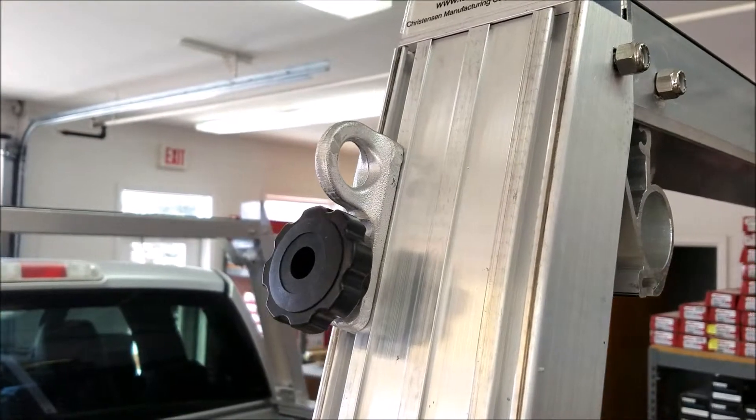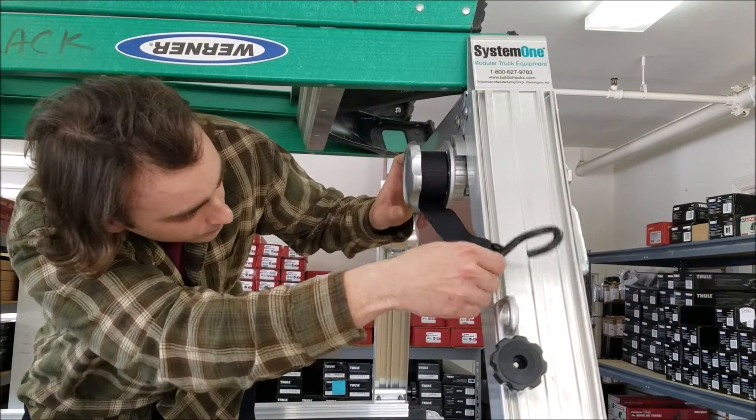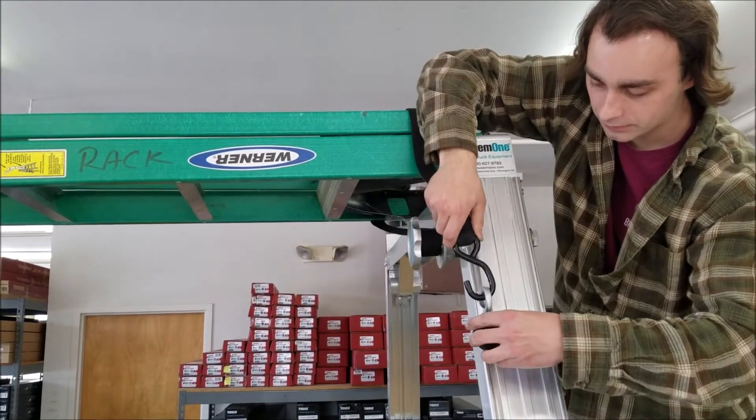The AK-6 Cargo Anchor can be used in all slotted sections of your System 1 truck rack, and it works great in conjunction with the System 1 work wenches.